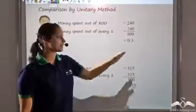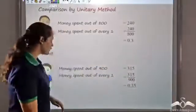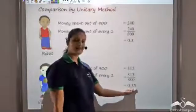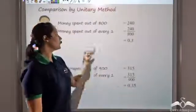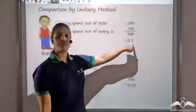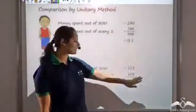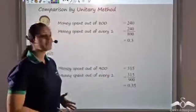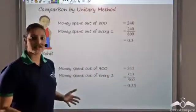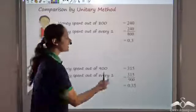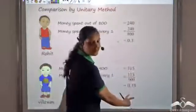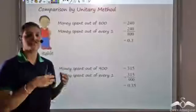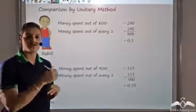I can see that Vikram is spending more because it is 0.35, whereas for Rohit it's only 0.3. So Vikram is spending more. But the process of finding it was very tedious, and these are two very small numbers. We usually do not like working with fractions or decimals.